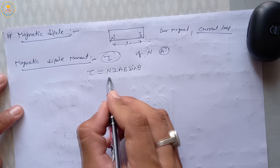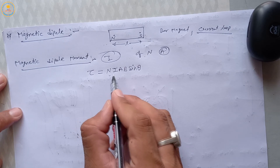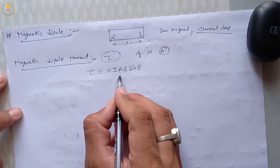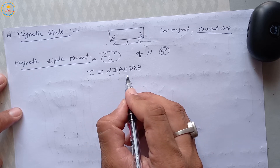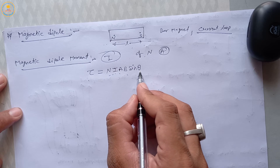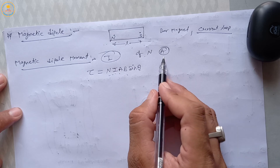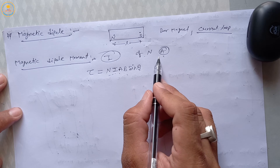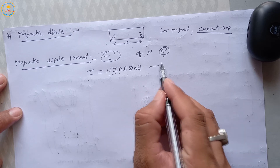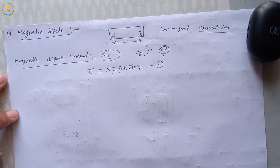Here τ is the torque, N is the number of turns of the coil, I is the current flowing through the coil, A is the cross-sectional area of the coil, B is the magnetic field, and θ is the angle between the plane of the coil and the magnetic field. This is equation number 1.